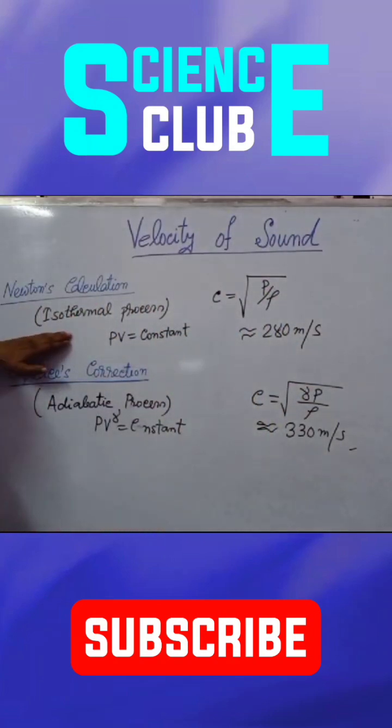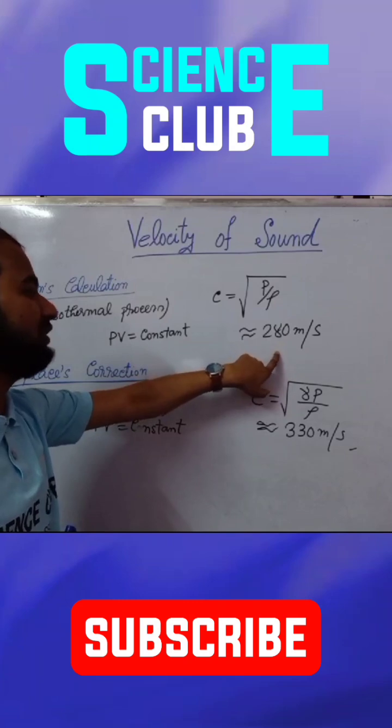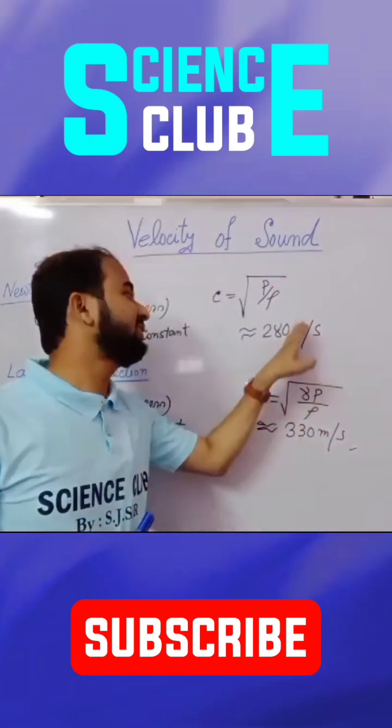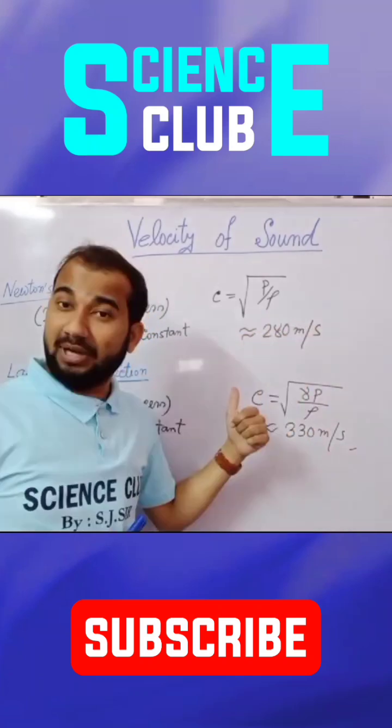According to Newton, the propagation of sound in air medium is the isothermal process. From here, Newton calculates that the value is 280 meter per second. But this is not the actual value, it's an incorrect value.